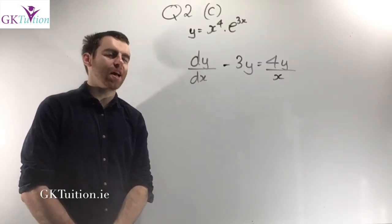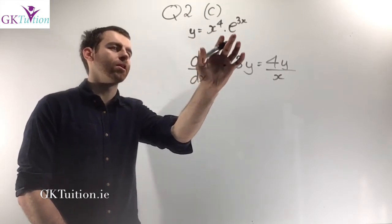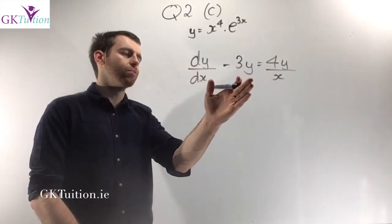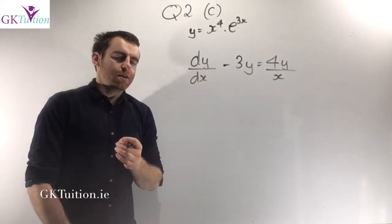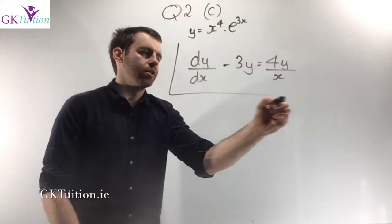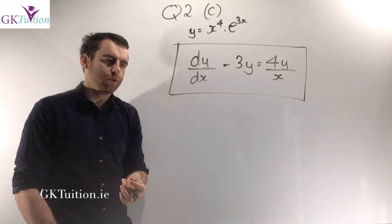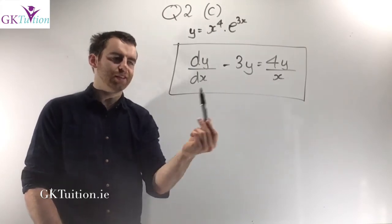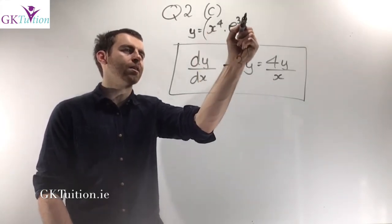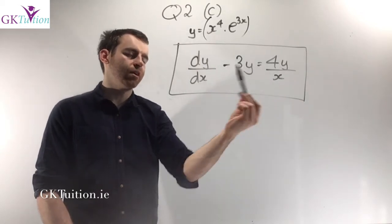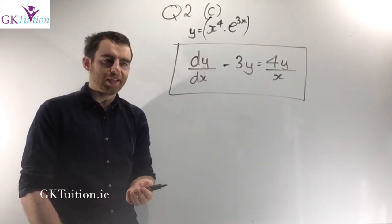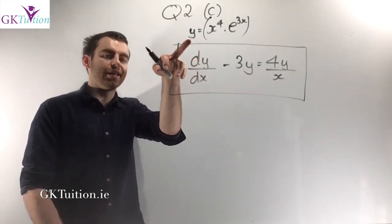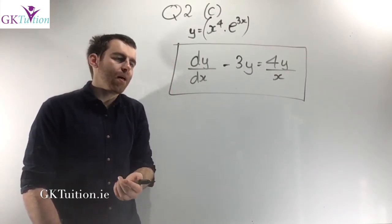The final part of the test, worth 10 marks, tells you y equals x to the power of 4 times e to the 3x and asks you to show that dy dx minus 3 times y equals 4y over x. The strategy is to find dy dx, then substitute both dy dx and y into the equation and show everything cancels or balances.